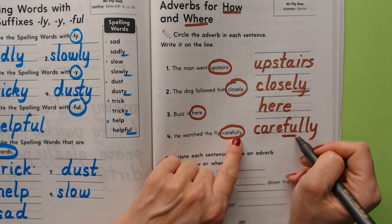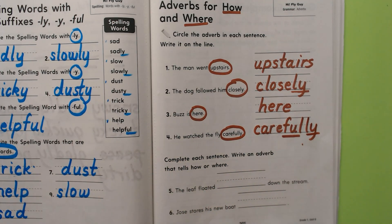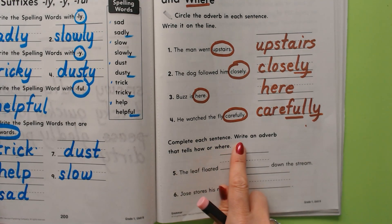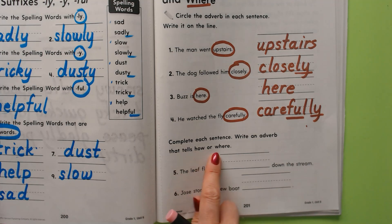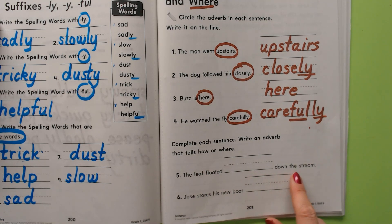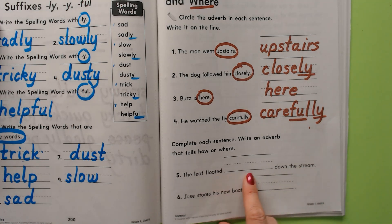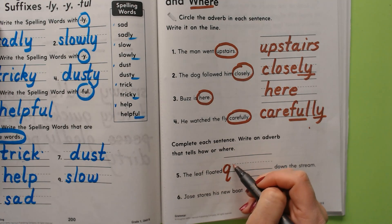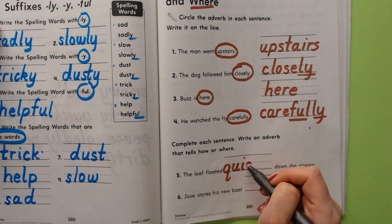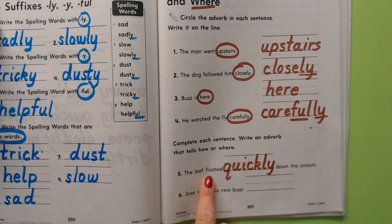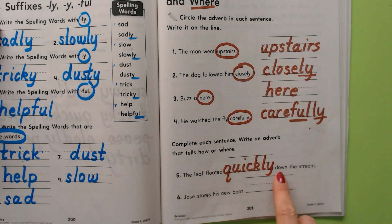Carefully actually had two suffixes: -ful and -ly. It's an adverb telling how he watched. Now we're going to complete each sentence by writing an adverb that tells how or where. 'The leaf floated _____ down the stream' — let's say quickly. It floated quickly — that's telling how it floated. Down the stream would also have been an adverb.